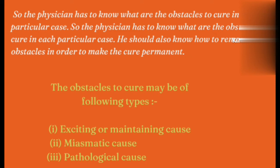The obstacles to cure may be of the following types — there are 3 types. First is exciting or maintaining cause, second is miasmatic cause, and third is pathological cause. We will discuss each one of them.